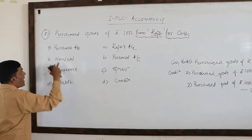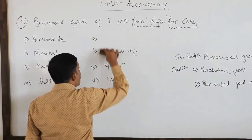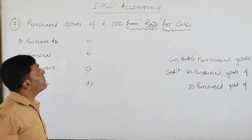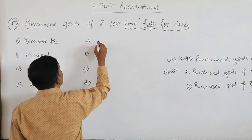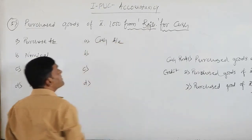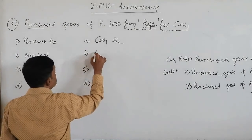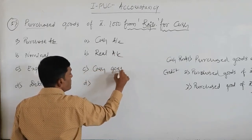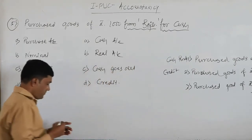So the first event is purchase account, which comes under nominal account — purchase is an expense, so as per the nominal account it is to be debited. In this example we are not going to write Raju's name because this is a cash transaction. We have paid cash for the purchases, so we write cash account. Cash is a real account and cash goes out, so as per the real account, credit what goes out — cash account is to be credited.